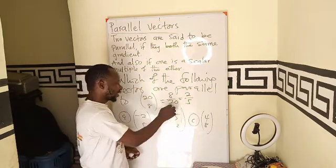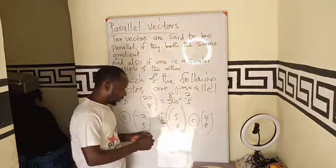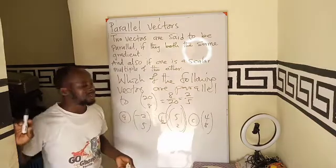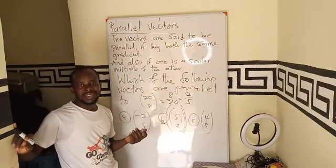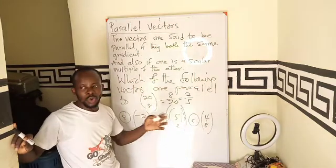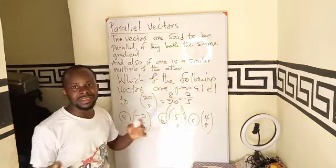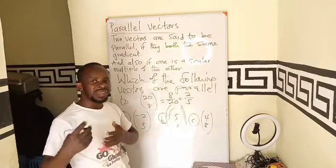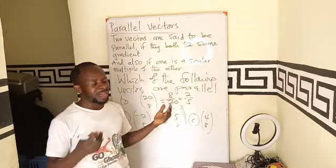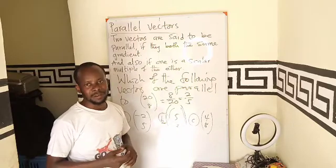So we can say that this vector, which is possible answer B, is parallel to this. So finding parallel vectors is just knowing the gradient, if I can put it that way, find the gradient, or knowing if there is a scale factor, a scalar, that multiply one to give the other.